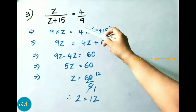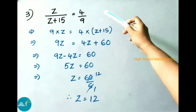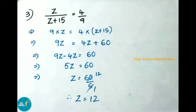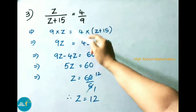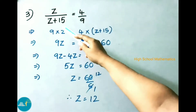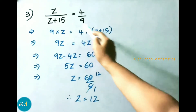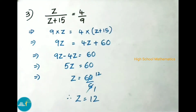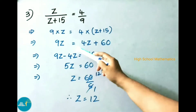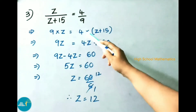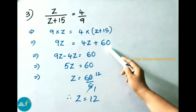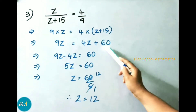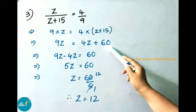See now question number 3: z / (z + 15) = 4/9. Now we have to do cross multiplication. z × 9 = 4 × (z + 15). That implies 9z = 4 × z + 4 × 15 = 4z + 60.